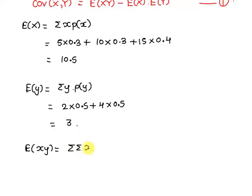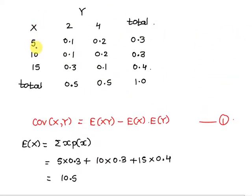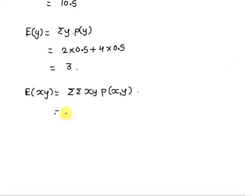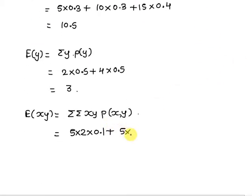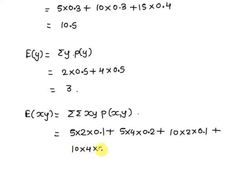The formula for the expected value of XY is equal to the double summation of x times y times the joint probability P(x,y). For x=5 and y=2 we have probability 0.1, so this is 5 times 2 times 0.1, plus 5 times 4 times 0.2, plus 10 times 2 times 0.1, plus 10 times 4 times 0.2, plus 15 times 2 times 0.3, plus 15 times 4 times 0.1. The expected value of XY is equal to 30.